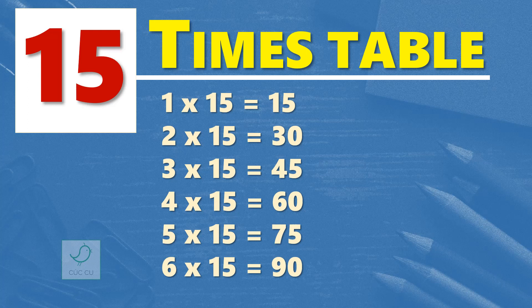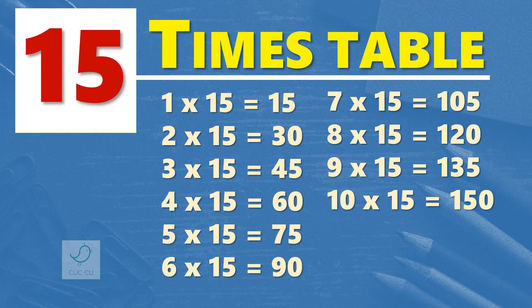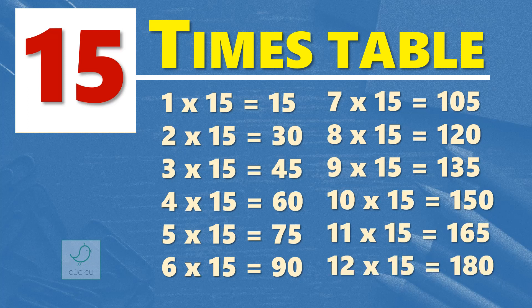Seven times 15 are 105. Eight times 15 are 120. Nine times 15 are 135. Ten times 15 are 150. Eleven times 15 are 165. Twelve times 15 are 180. One more time.